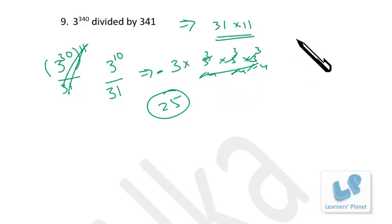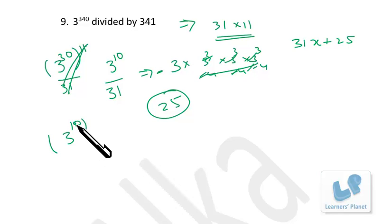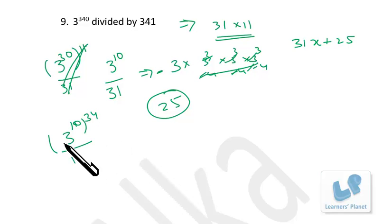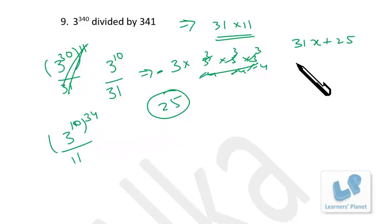So 3 raised to 340 is in 31x plus 25 format. Now from 11: 3 raised to 10 divided by 11, by Fermat's little theorem the remainder is 1. So 3 raised to 340 divided by 11 also gives remainder 1, meaning it is in 11y plus 1 format.